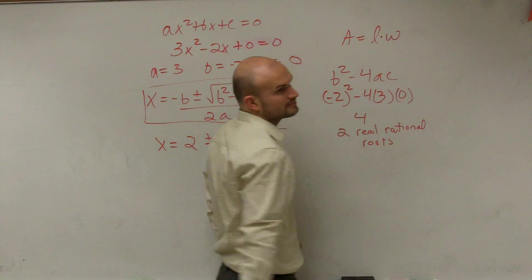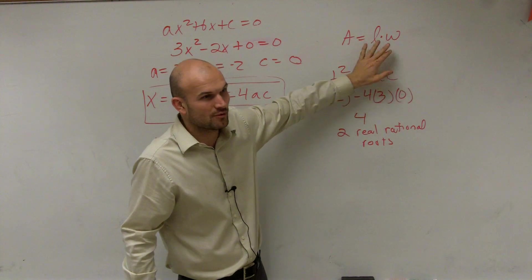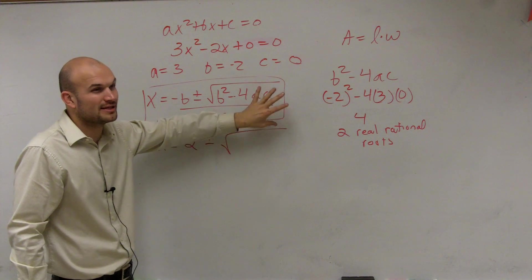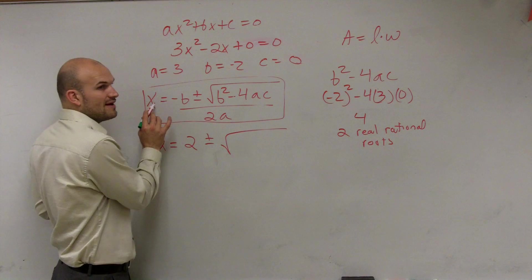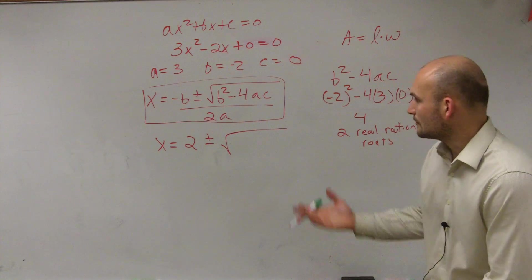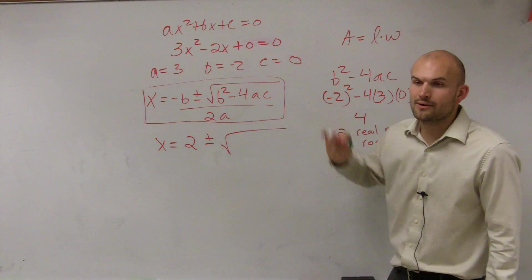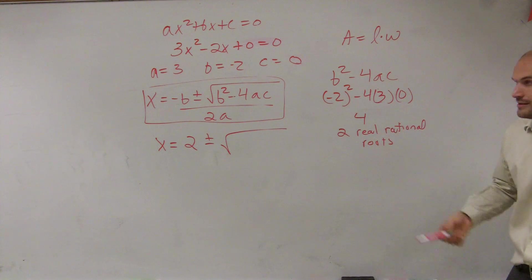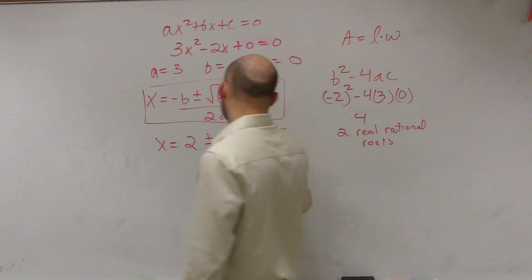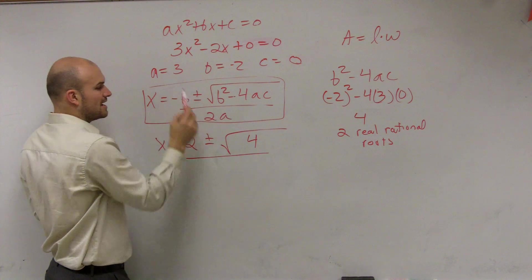It's like: area equals length times width — I can explain why, but for now just use it. Similarly, just understand the values of x equal this formula. So now we have 2 plus or minus. For b squared minus 4ac, did we already figure that out? Yes — the answer is 4. So it's the square root of 4, divided by 2 times a, which is 6.